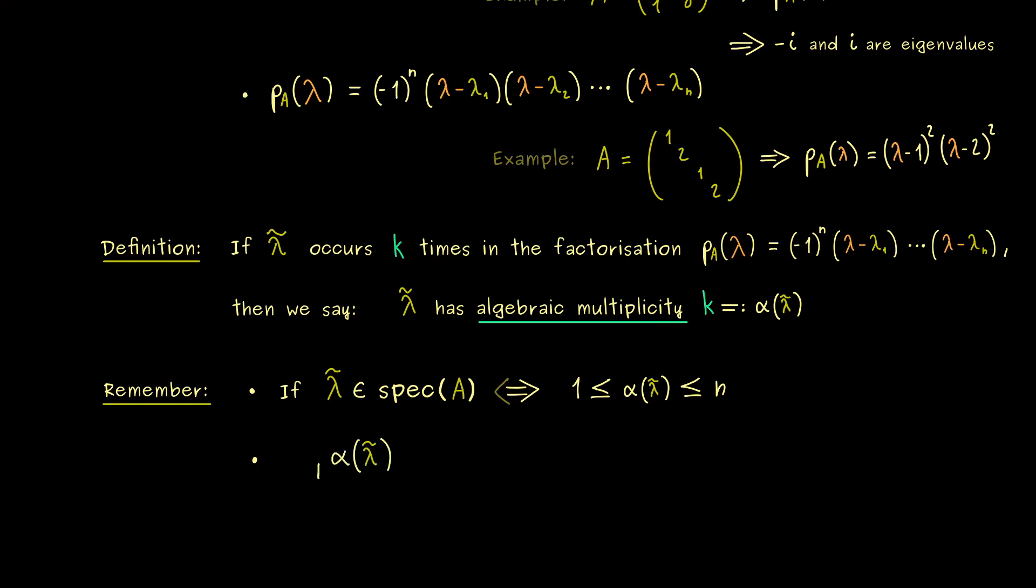Therefore I would say we can simply sum up all possible values for the algebraic multiplicity. Of course here the matrix A and the characteristic polynomial are fixed, but we can go through all λs that are possible as zeros. This means λ̃ could be any complex number. So at first glance this looks like a strange sum, but please note most entries here are zero anyway.